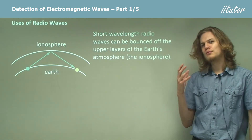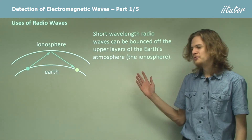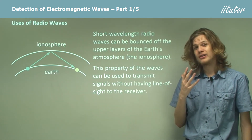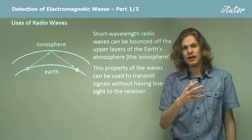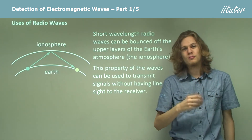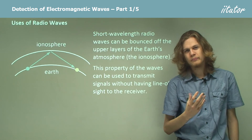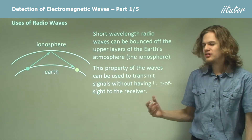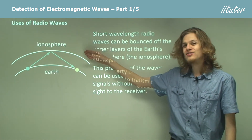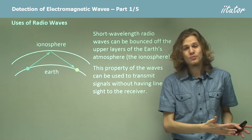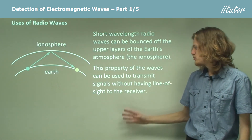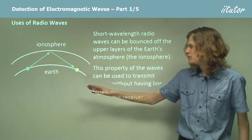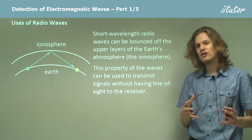Shortwave radio waves can actually be bounced off the atmosphere, which is very useful for communication. We can send a signal to another spot on Earth even if we can't see that other spot. If we want to transmit visible light from place to place, we need a line of sight to the destination. But for shortwave radio, that's not the case. If we send an AM radio signal, we can send it straight up to the sky and it will bounce off the ionosphere and back down to the ground, allowing us to transmit without being able to see the receiver — even curving messages around the curvature of the Earth.